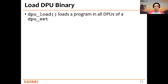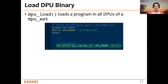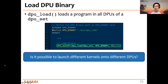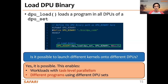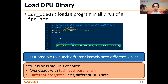DPU-load loads a program into all DPUs of a DPU set. We specify the binary file and the DPU set. It is also possible to launch different kernels onto different DPUs—for example, to enable workloads with task-level parallelism or different programs using different DPU sets. We can allocate two or more DPU sets and load different DPU kernels into these different sets.